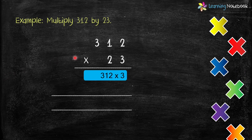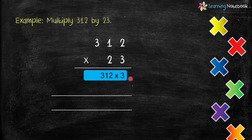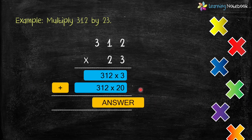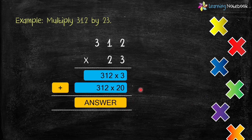In step 1, multiply 312 by 3, which is the one's digit in number 23. In step 2, multiply 312 by 2 tens, or 20. And in step 3, we will add both these products to get the answer.